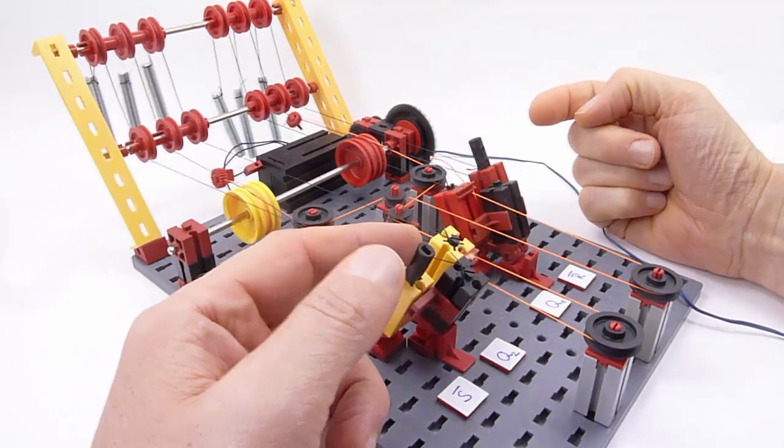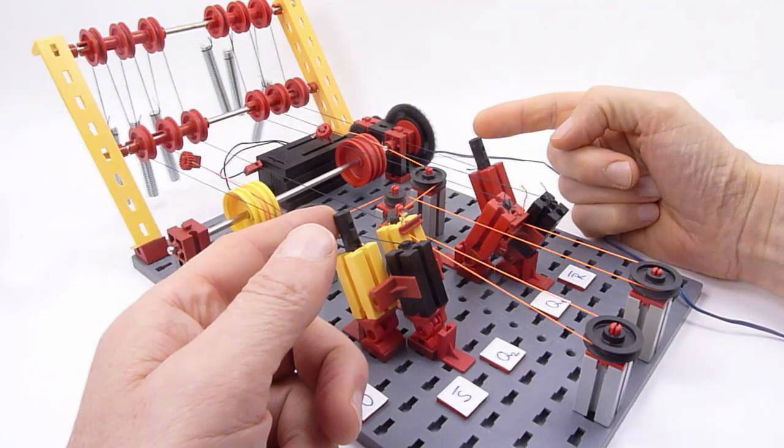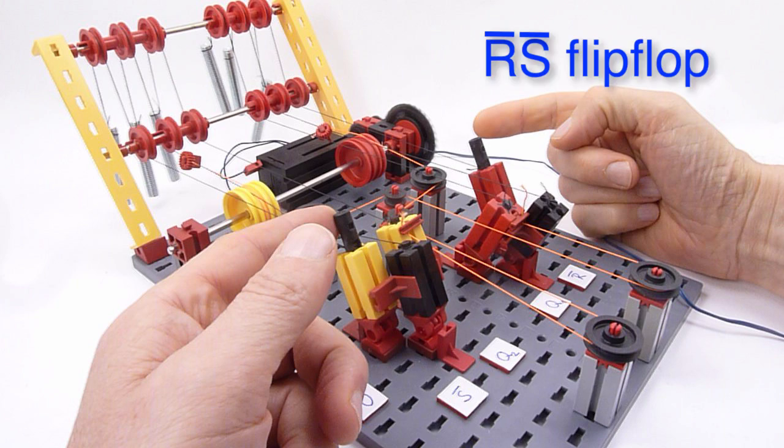This bit can be set and reset. This is why it is called set reset flip-flop or briefly R-bar S-bar flip-flop.